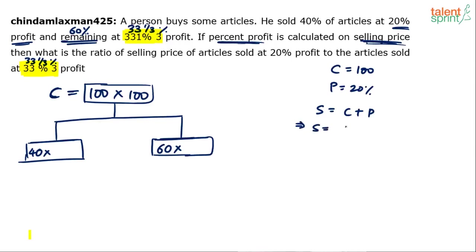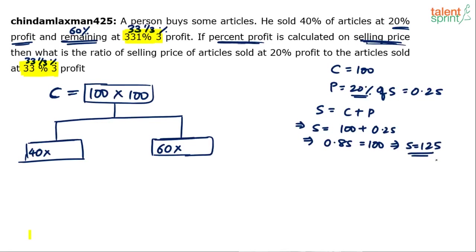Selling price equals 20% of selling price, which is 0.2S, plus cost price of 100. So: S = 100 + 0.2S, which gives 0.8S = 100, so S = 125. Alternatively, since profit is 20% of selling price, cost price is 80% of selling price: 80% = 100, so S = 125. The selling price in the first case is 125 rupees.